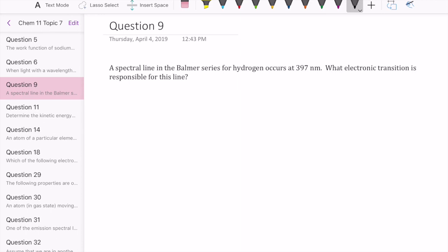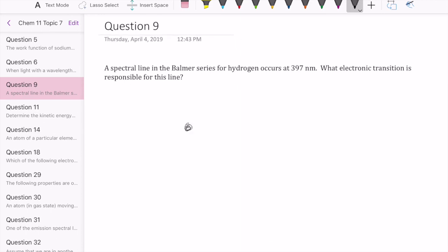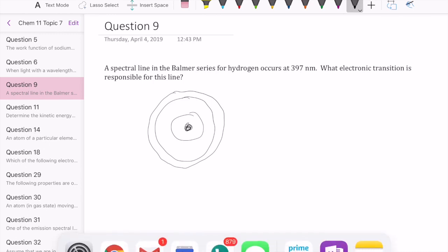So a quick reminder of the Bohr model. What it looks like is you have a nucleus in the middle and then you have these orbits where the electrons could be located around the nucleus. So that's what the Bohr model is.